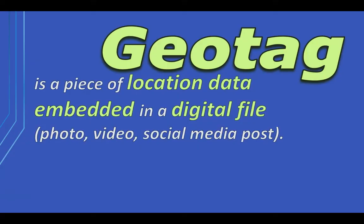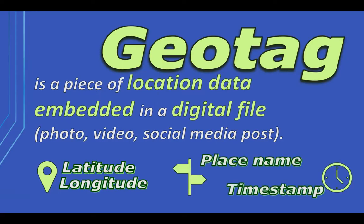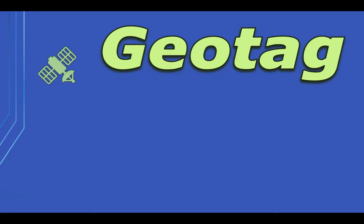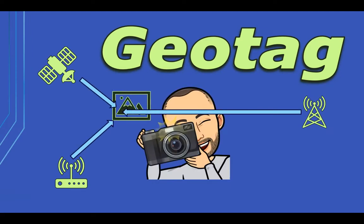A geotag is a piece of location data embedded in a digital file like a photo, video, or social media post. It usually contains the GPS coordinates — the latitude and longitude — and sometimes additional details like the place name or a timestamp. They work by using your device's GPS, or Global Positioning System, the Wi-Fi networks you're connected to, and your mobile network to determine your exact location when you take a picture or make a post.